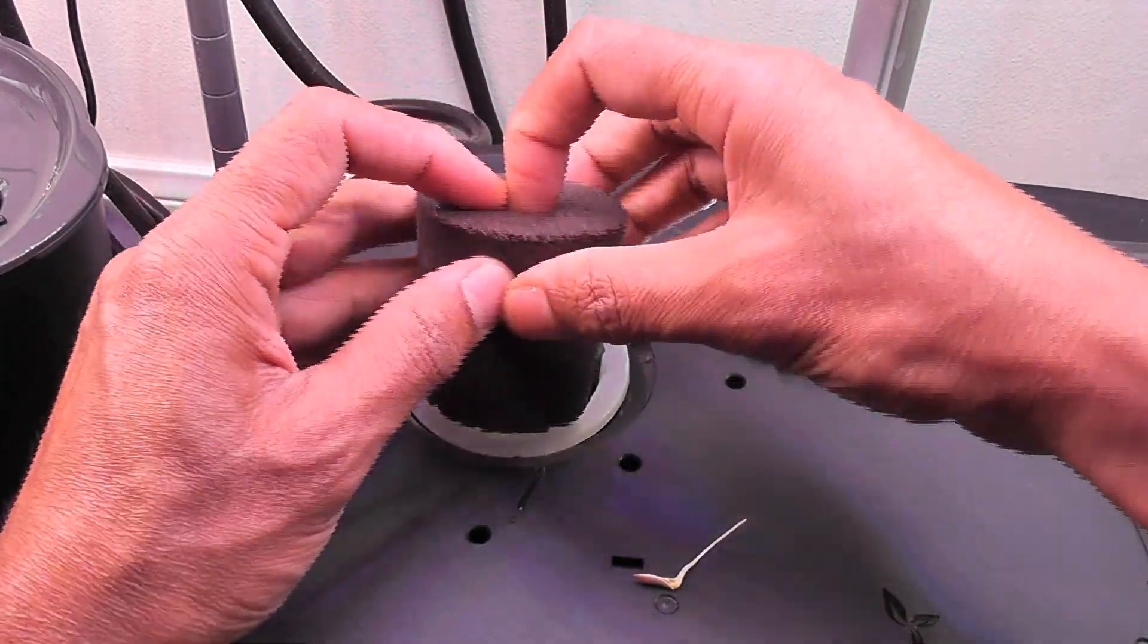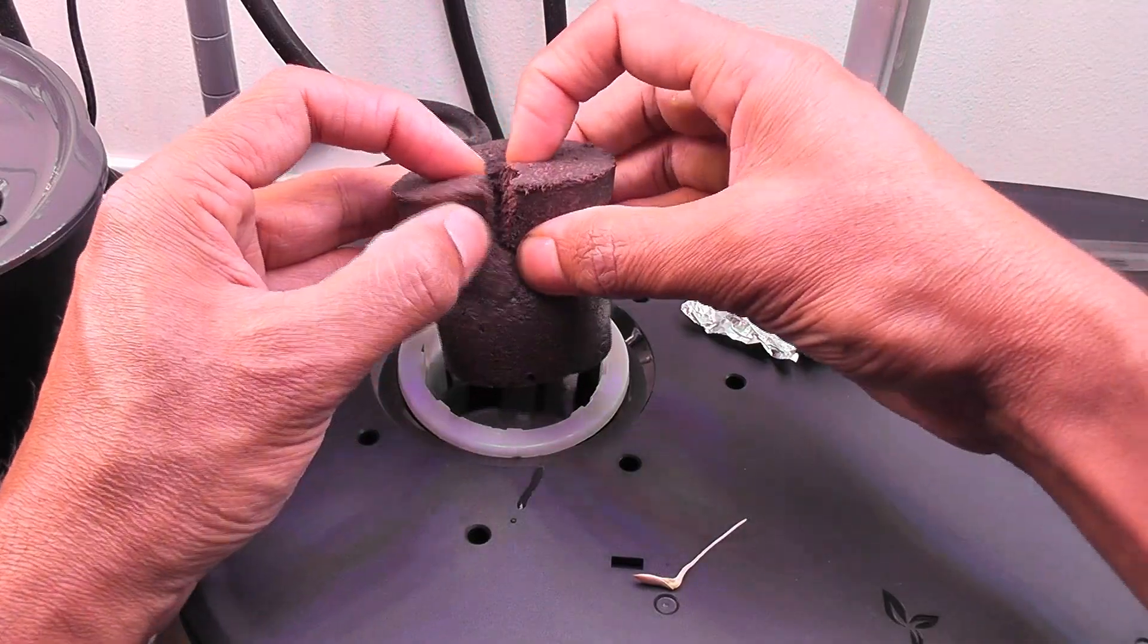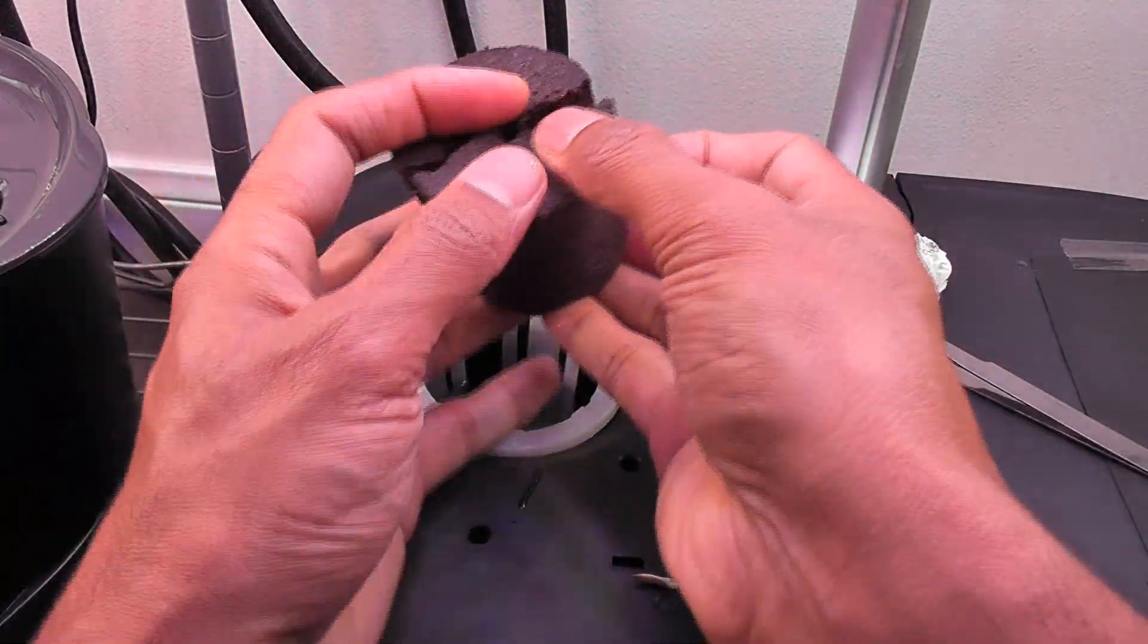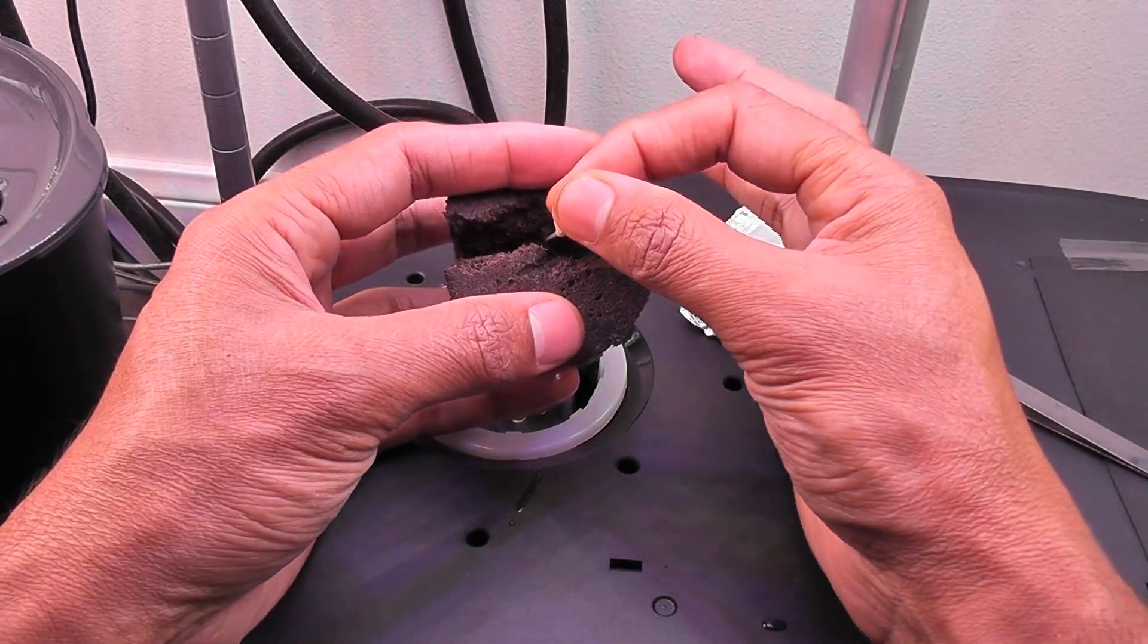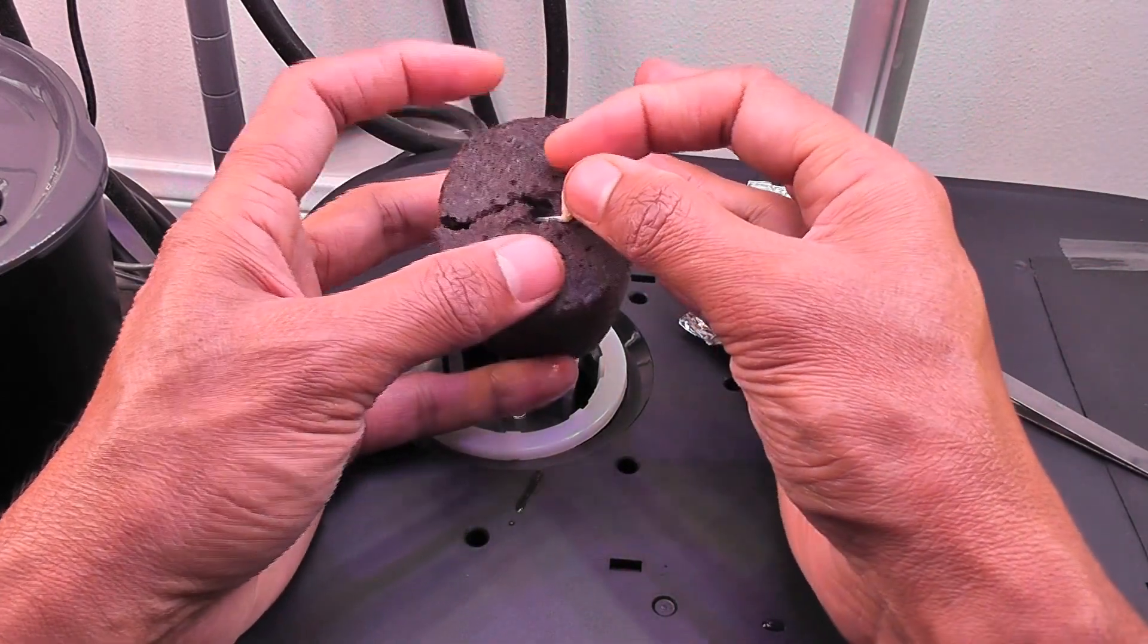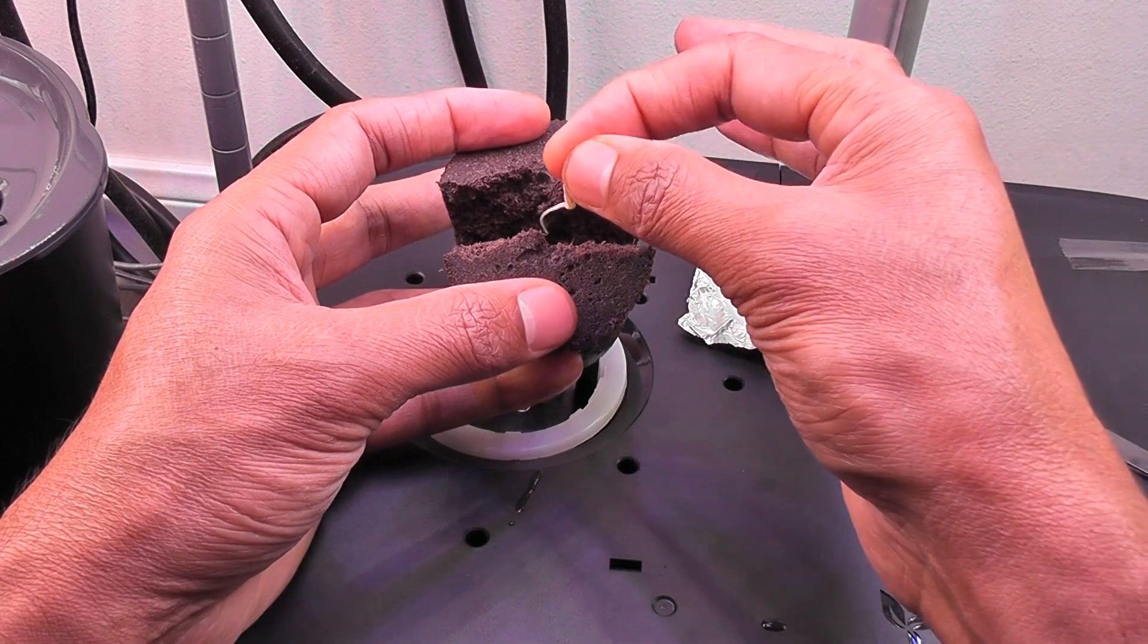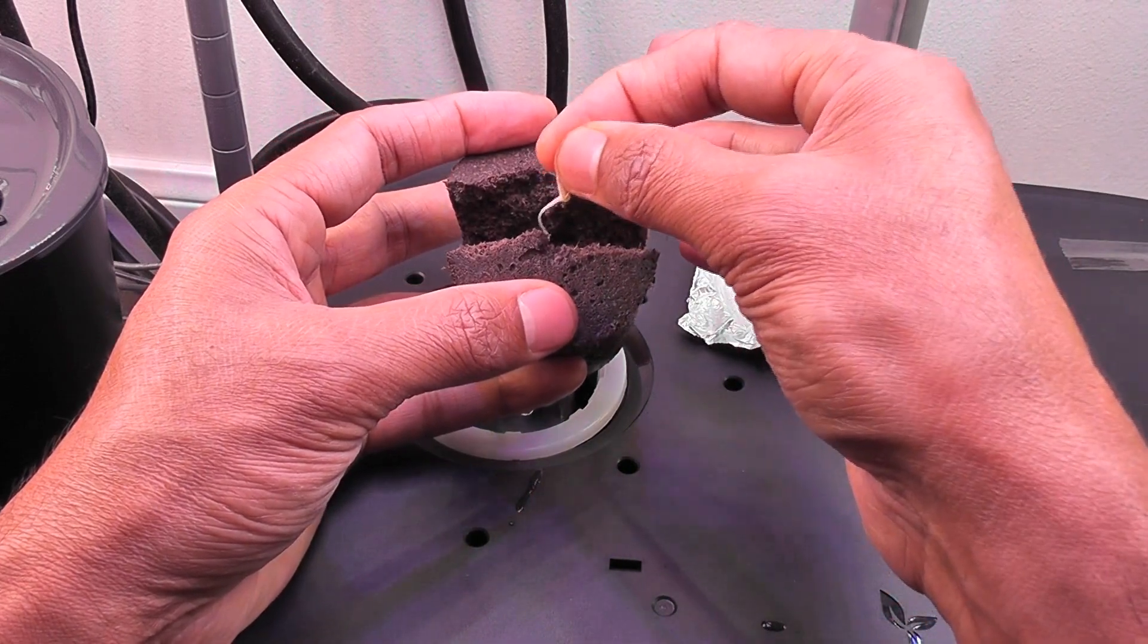Then open the sponge a little bit. Don't hesitate to open it big enough if the roots are long. Then insert the seedling deep into the sponge. Make sure the roots are as deep as possible. Be very careful as the seedlings are so delicate and sensitive.